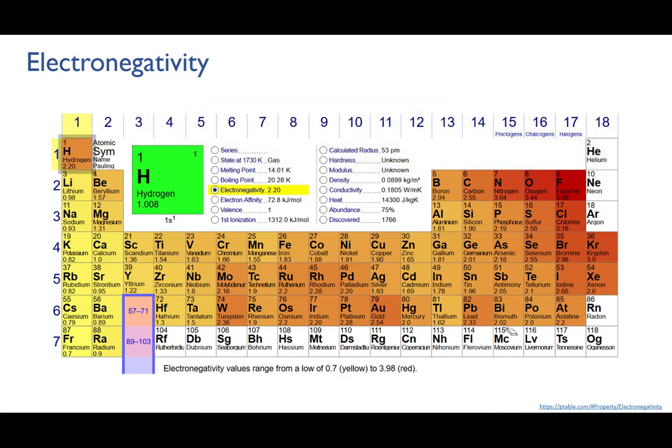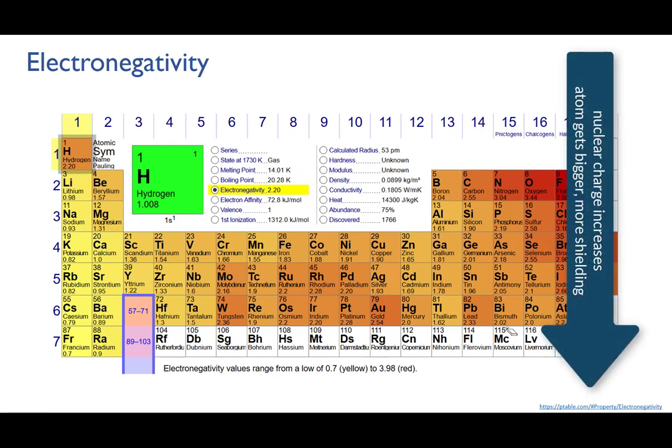Going down a group, the nuclear charge still increases, but it's more than cancelled out by the increased radius of the atom, and the extra electron levels that provide shielding, so electronegativity decreases.